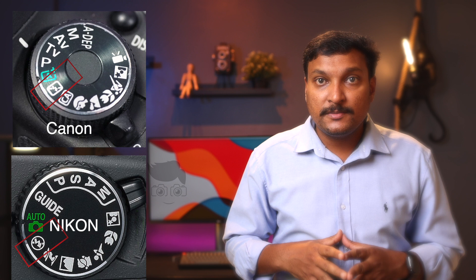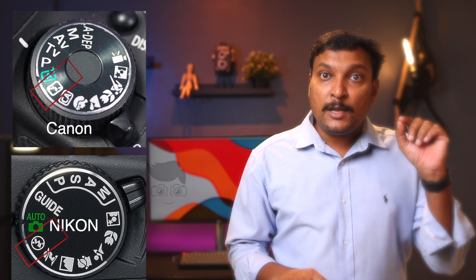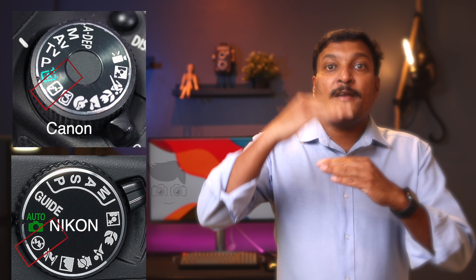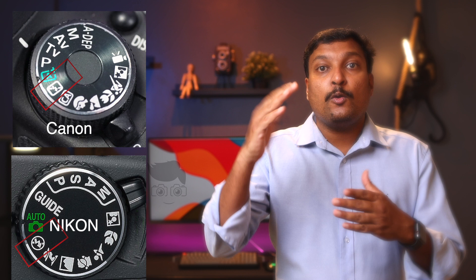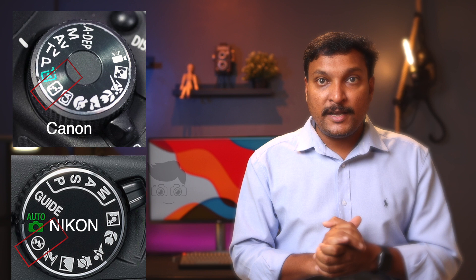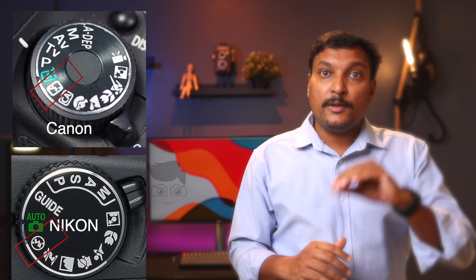You can also use flash mode. On Canon and Nikon, there is a flash mode. It is actually a full auto mode, but with the flash enabled. Normally in auto mode you can disable flash, but in flash mode the flash fires automatically, which is useful in low light situations.